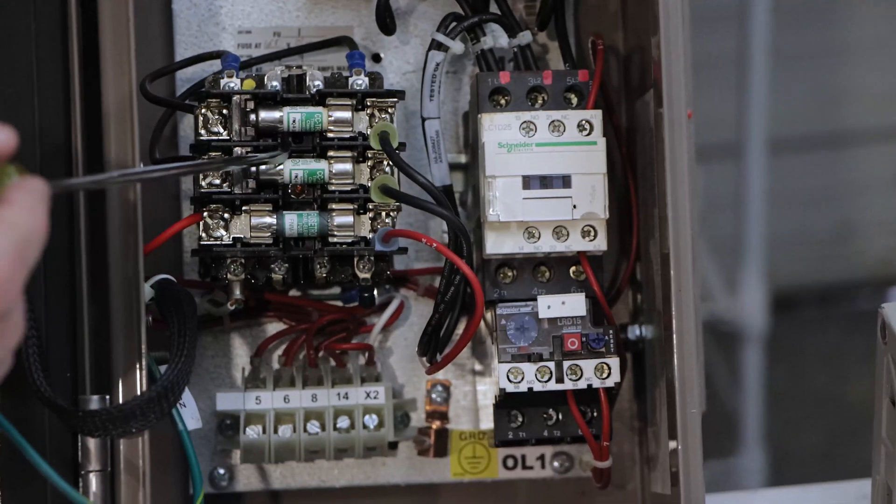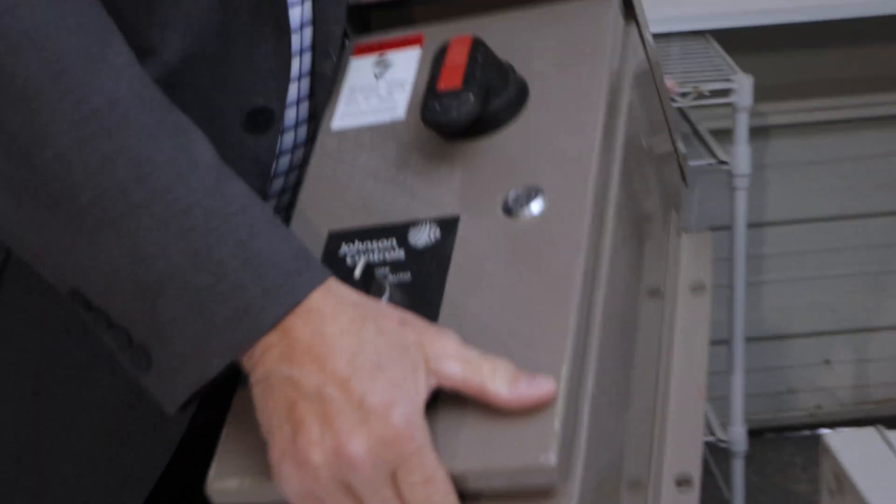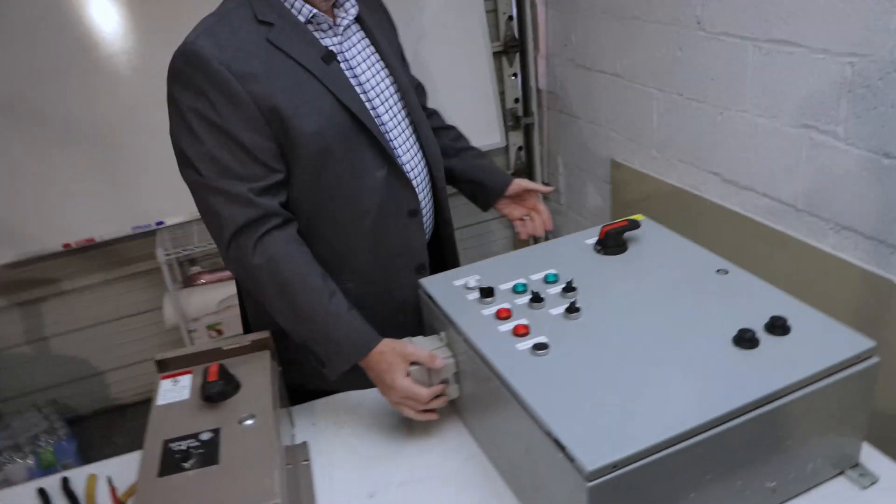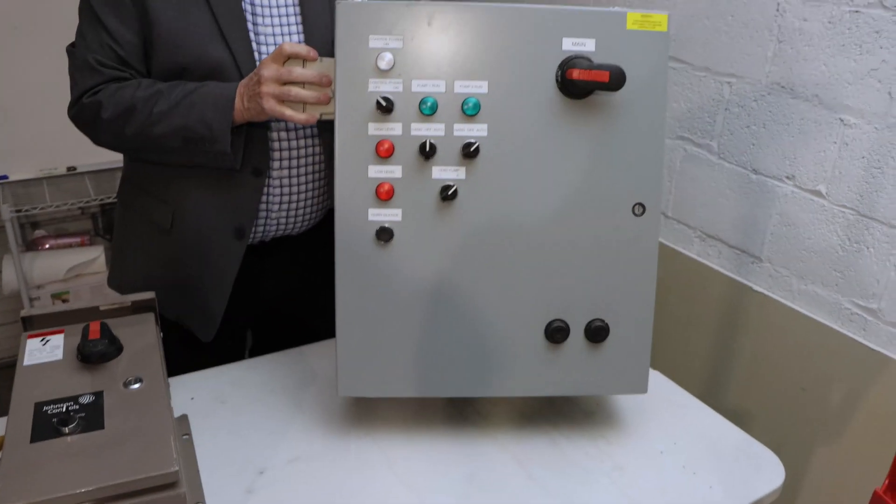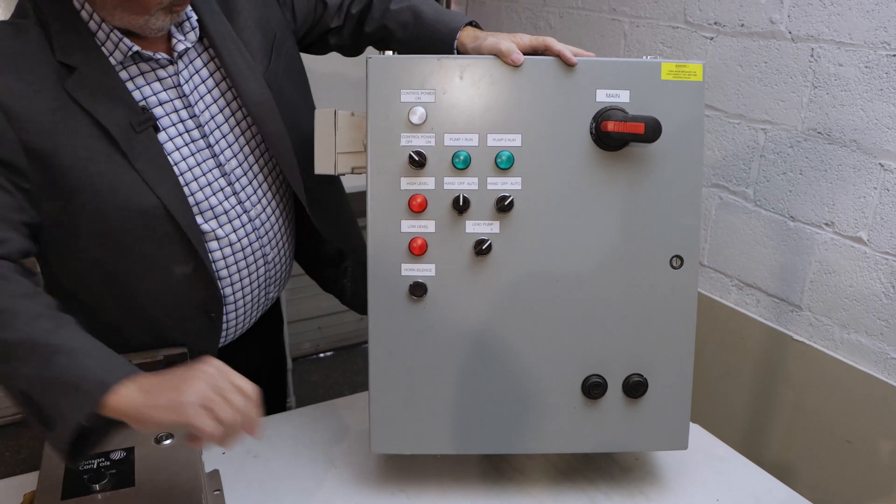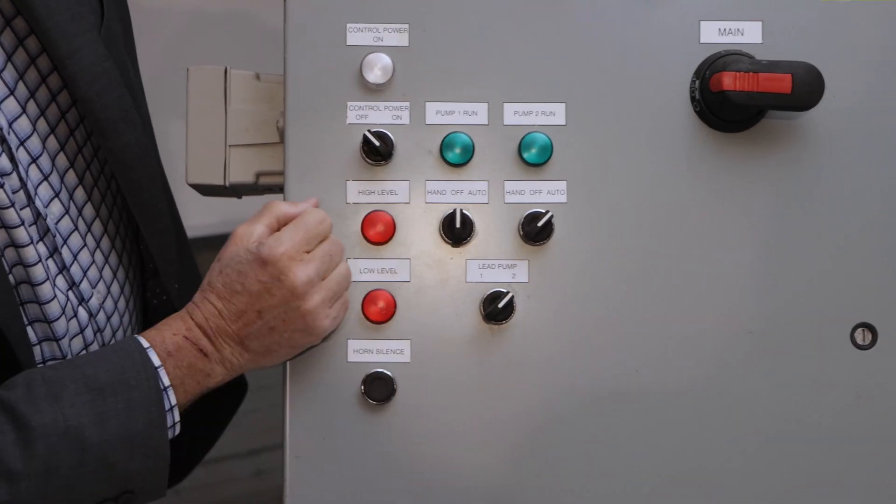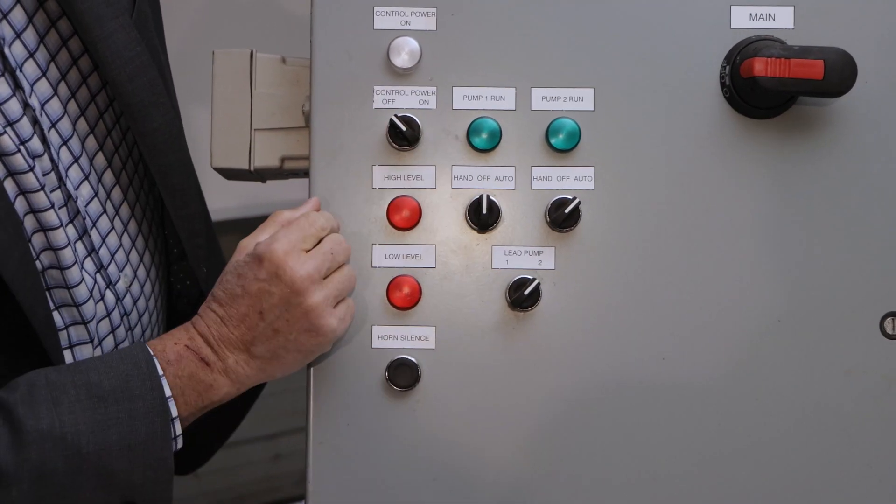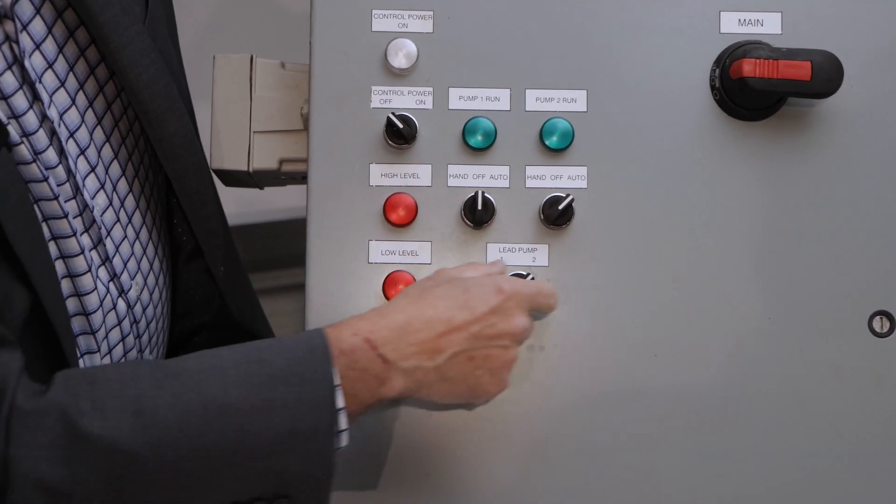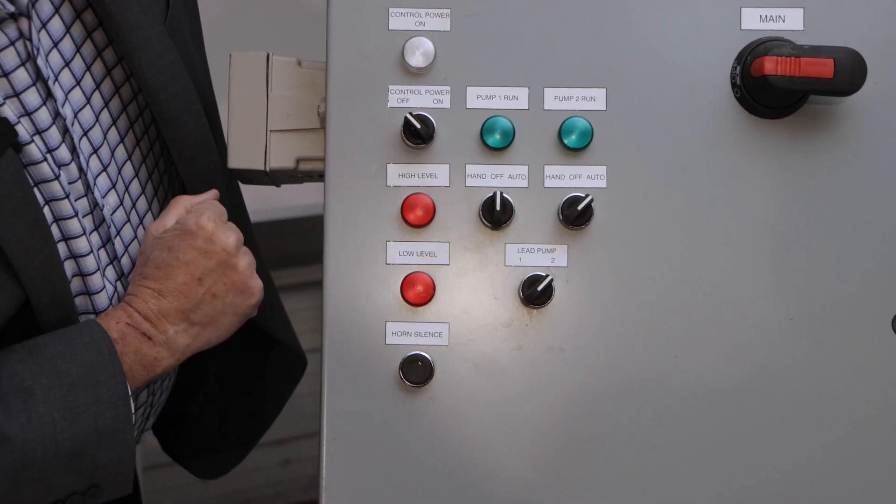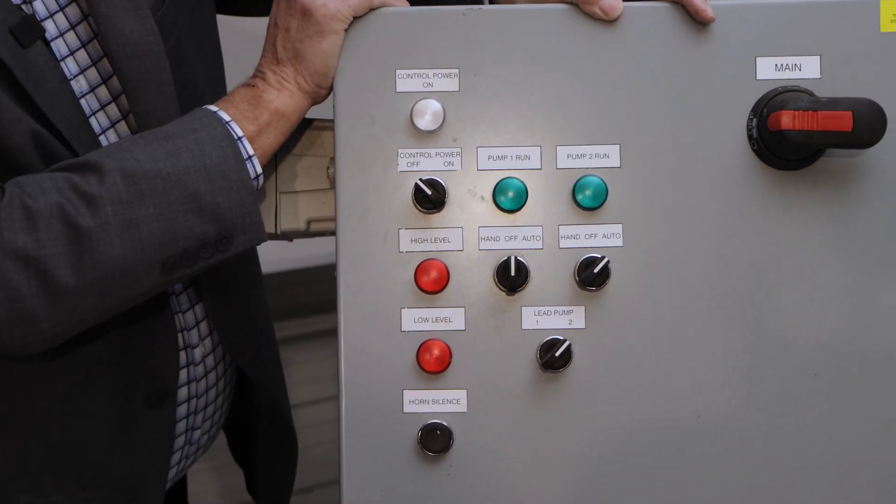to power up this transformer. So this is a control transformer that's going to give us control power. Well, what do we typically see on a control circuit? If we look at this cabinet right here, we can see some of the manual functions that we do with motor controls. First of all, control power is on. Pump one run, pump two run. We have control power off on, high-level alarm, low-level alarm. We have a horn silence. We select a pump: hand-off automatic, hand-off automatic.